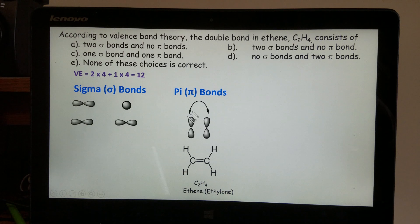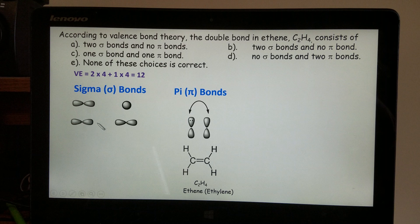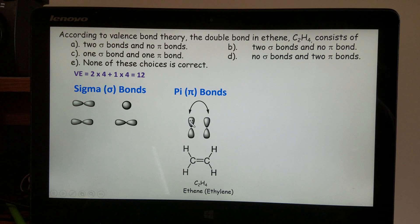Then pi bonds, they will use the p orbitals, but they don't approach each other head to head or head to tail, rather parallelly shoulder to shoulder. That's how pi bonds are formed.